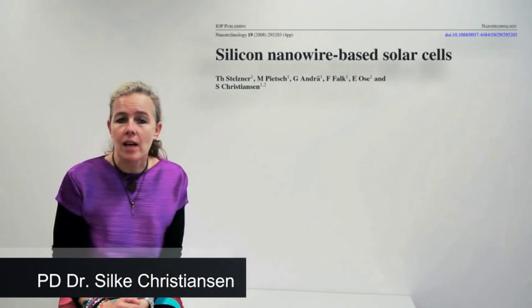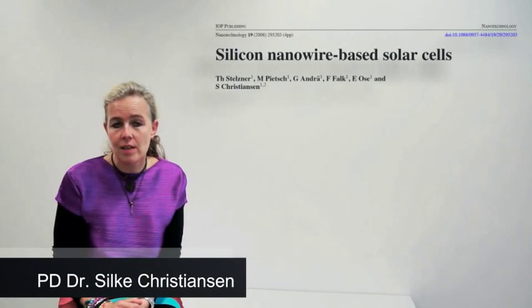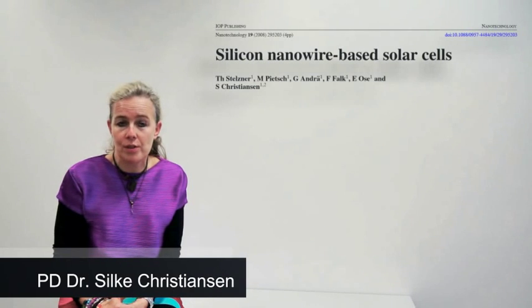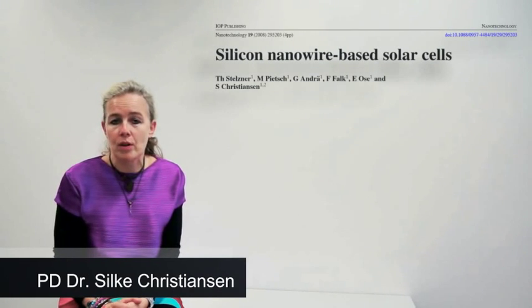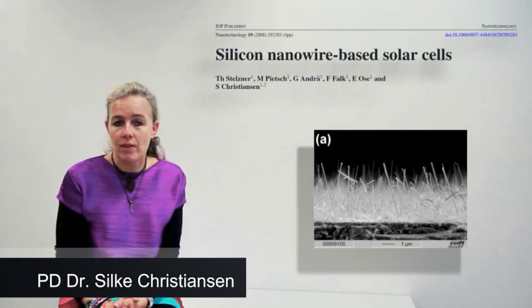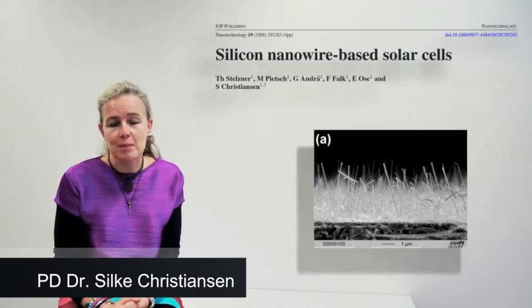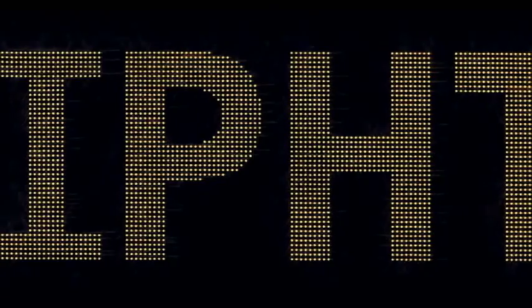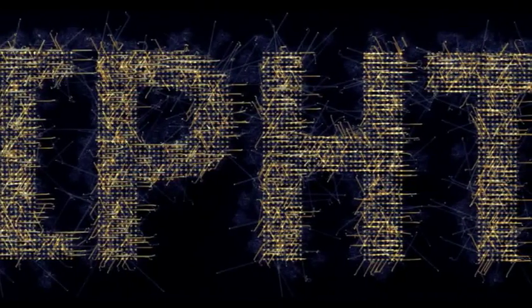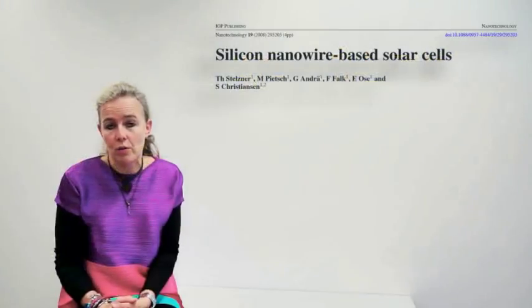The paper is about silicon nanowire solar cells. The nanowires we were using in 2008 when the paper was published were so-called VLS nanowires grown by the vapor liquid solid mechanism. It's a growth mechanism where you essentially use metal catalyst to catalyze the one-dimensional nanowire growth.